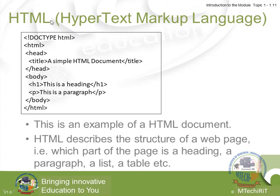Now let's look at HTML — the Hypertext Markup Language. This is a simple example of an HTML document. In the document type, we have HTML, header, title, and closing tags. We will look at them in detail as we proceed. An HTML document describes the structure of a web page — that is, which part of the page is a heading, a paragraph, a list, or a table. These are all defined using HTML tags.